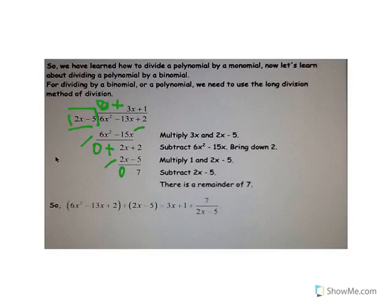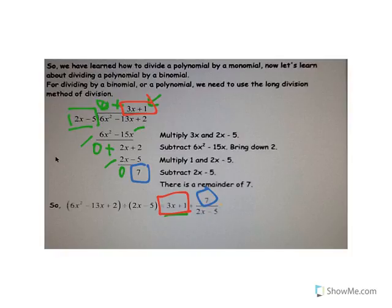I'm left with 2 minus negative 5, which is going to be 7. The answer to this whole problem is 3x plus 1 — that's the quotient. But we also have this 7 as a remainder, just like with remainders in regular division. So we write it as 3x plus 1 plus 7 over the divisor. Think of it like 10 divided by 3 equaling 3 and 1 third — the remainder over the divisor.